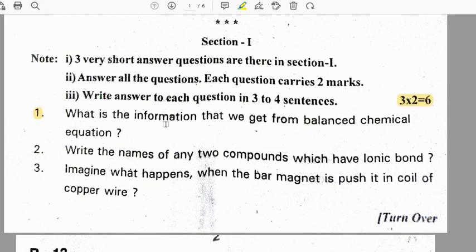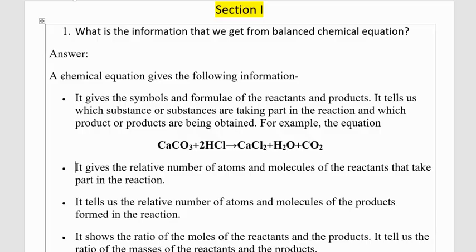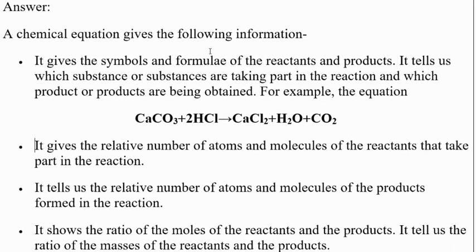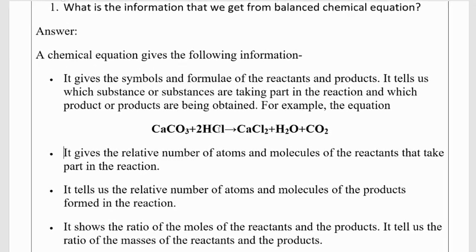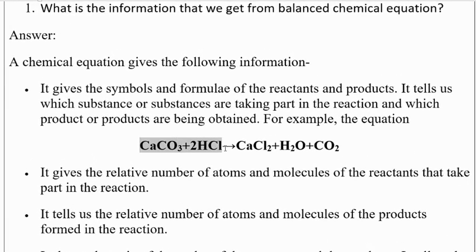First question: what is the information that we get from balanced chemical equation? A chemical equation gives the following information: it gives the symbols and formulae of the reactants and products. Reactants are the left side of the arrow, and right side of the arrow we call products.